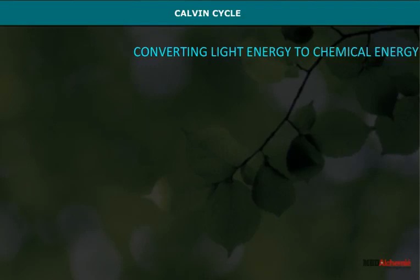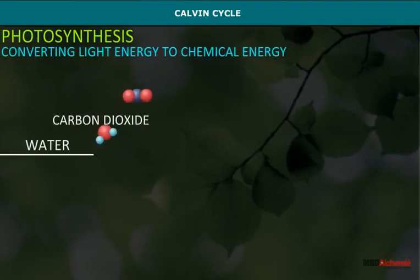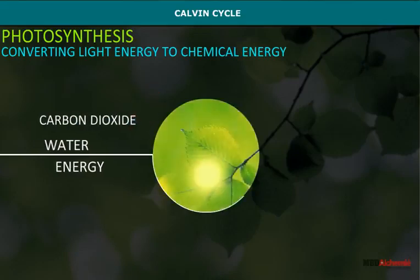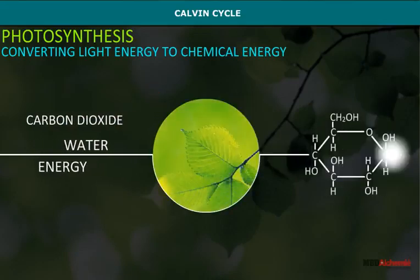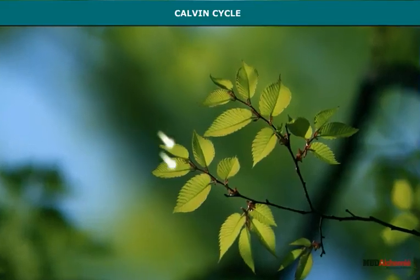Calvin Cycle: The process of Calvin Cycle takes place inside the stroma of chloroplast. It is also known as light-independent phase.